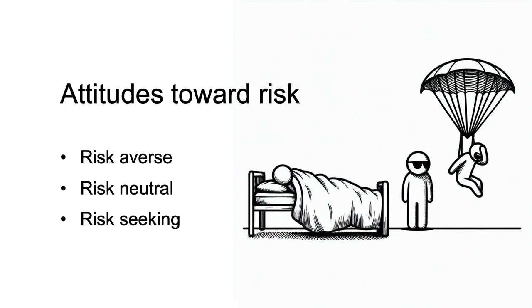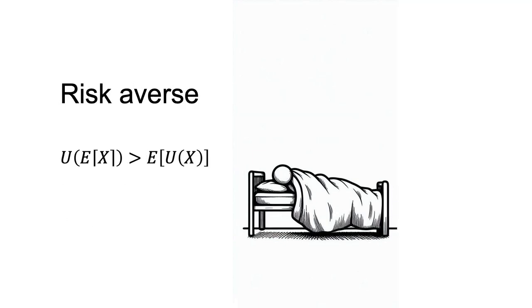There are three possible attitudes toward risk: risk aversion, risk neutrality, and risk seeking. If a person prefers a sure amount to a gamble with the same expected value, they are risk averse — that is, the utility of the expected value of X is greater than the expected utility of X.